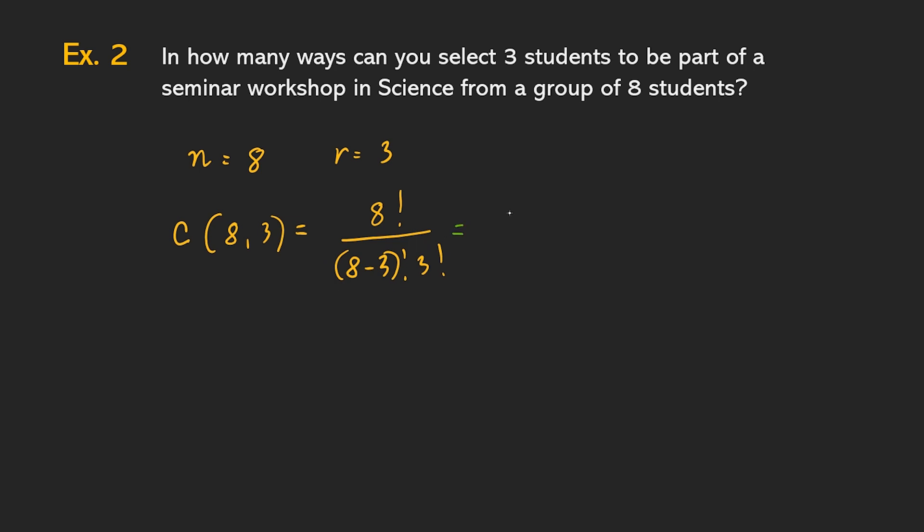So, when we expand this, this is eight factorial over five factorial, three factorial. And we already know how to do this. This is eight times seven times six times five factorial. Ito, yung five factorial, yung three factorial, i-expand ko ng konti. Hindi pala konti. I-expand ko. And then, cancel na yung five factorial. Yung three times two, di ba, six yan. So, cancel na din to. So, we were left with eight times seven, which is fifty-six. There are fifty-six ways of selecting three students from a group of eight students.